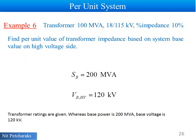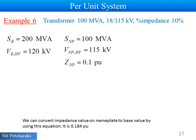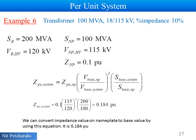Example 6: Transformer ratings are given. Whereas base power is 200 MVA and base voltage is 120 kV. Find per unit value of transformer impedance based on system base value. We can convert impedance value on nameplate to base value by using this equation. It is 0.184 per unit.